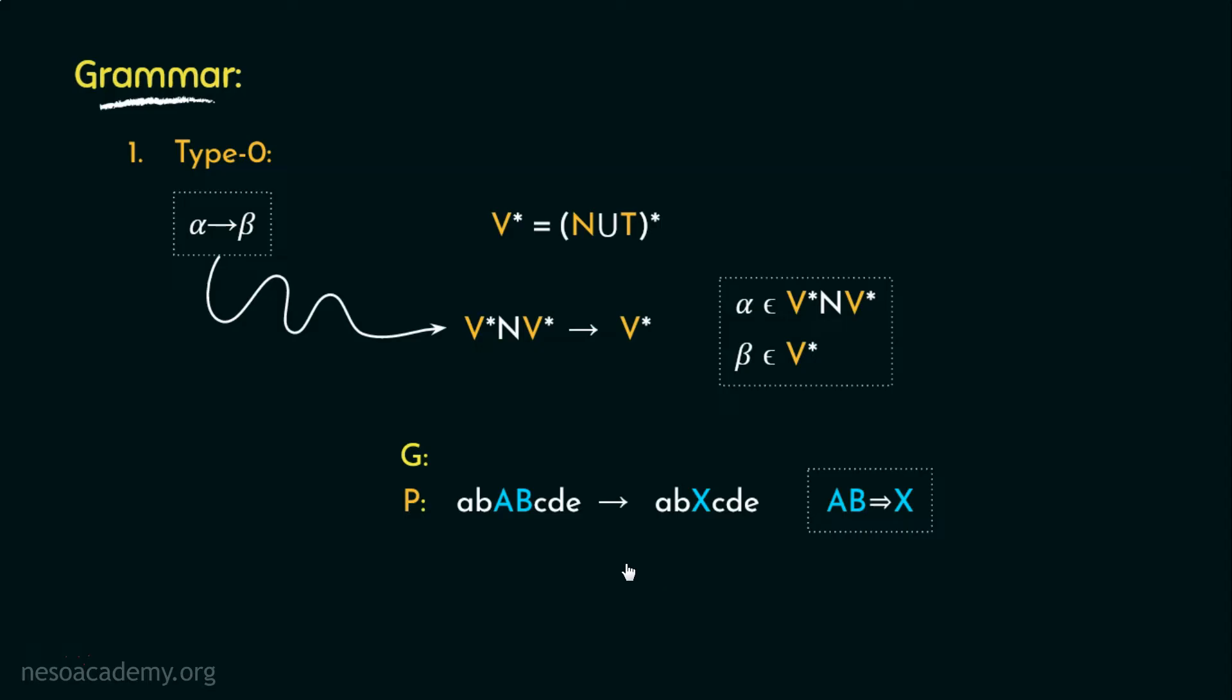Observe carefully, in this particular production rule, alpha is having a mixed batch of seven elements, that is five terminals and two non-terminals. Now, the sentential form it is generating includes lesser number of elements. To be specific, six elements. Five terminals, lowercase a, b and c, d, e. And one non-terminal, that is X.